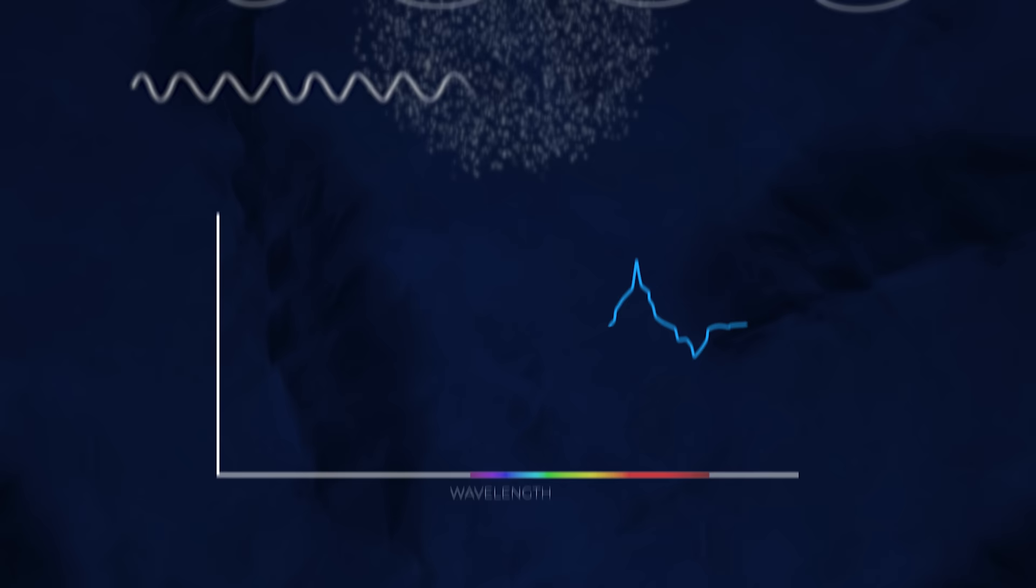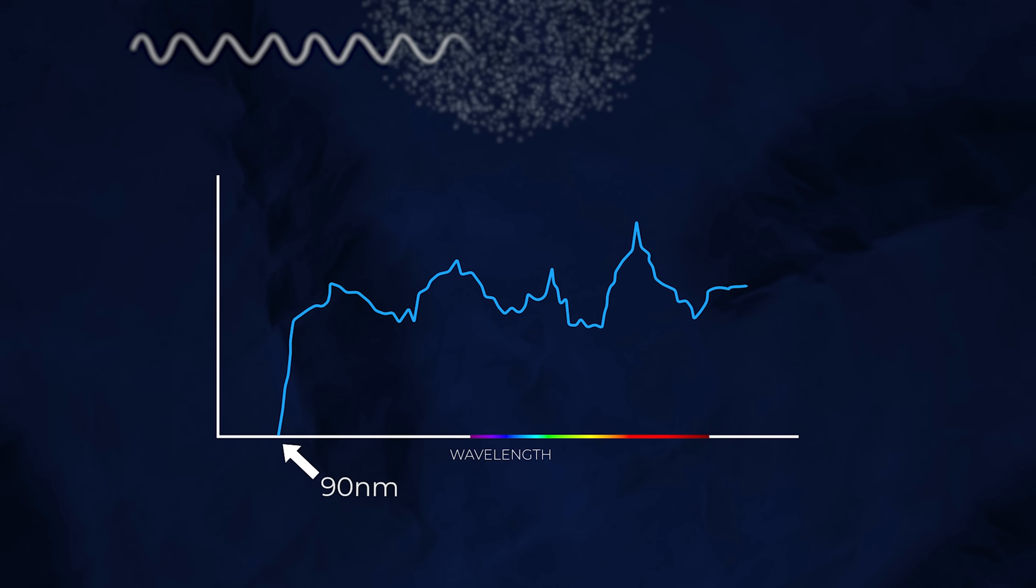This shows up as a dramatic drop-off at around here on the spectrum. So below this, no light should reach us. For light that has been redshifted, that drop-off point will appear much further up the spectrum.